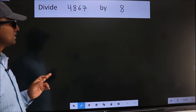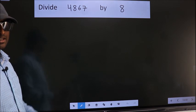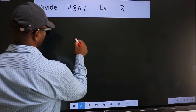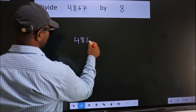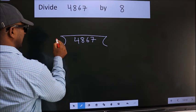Divide 4867 by 8. To do this division, we should frame it in this way. 4867 here, 8 here.